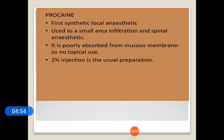Procaine is the first synthetic local anesthetic, used as a small area infiltration and spinal anesthetic. It is poorly absorbed from the mucous membrane and so has no topical use. A 2 percent injection is the usual preparation.